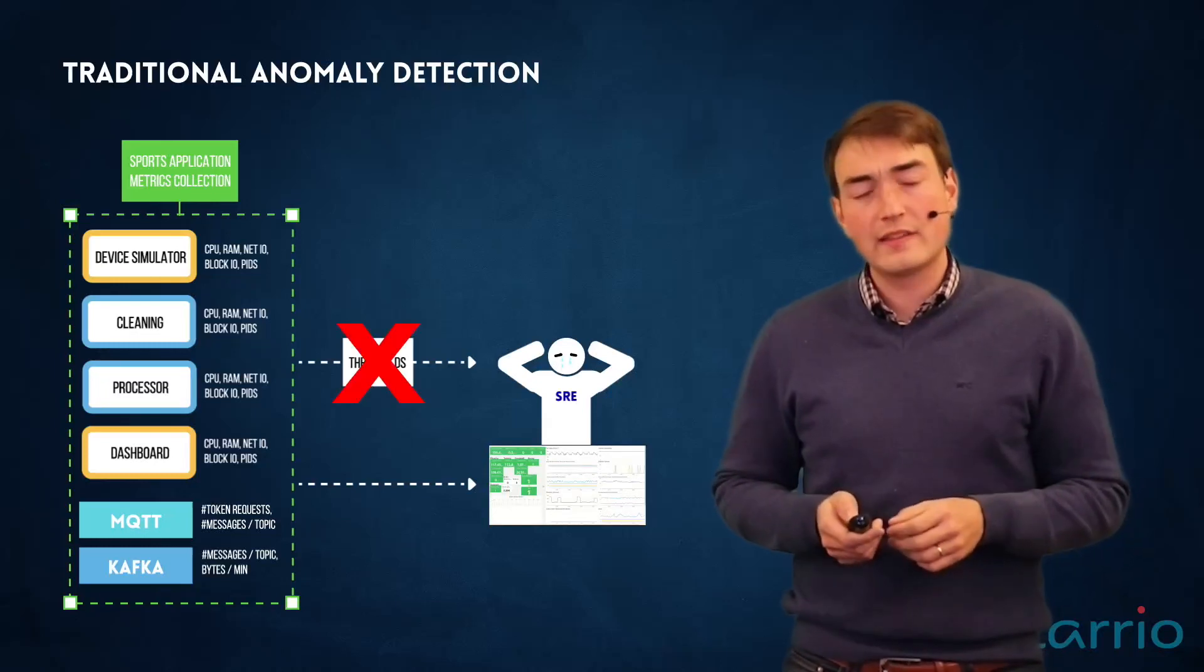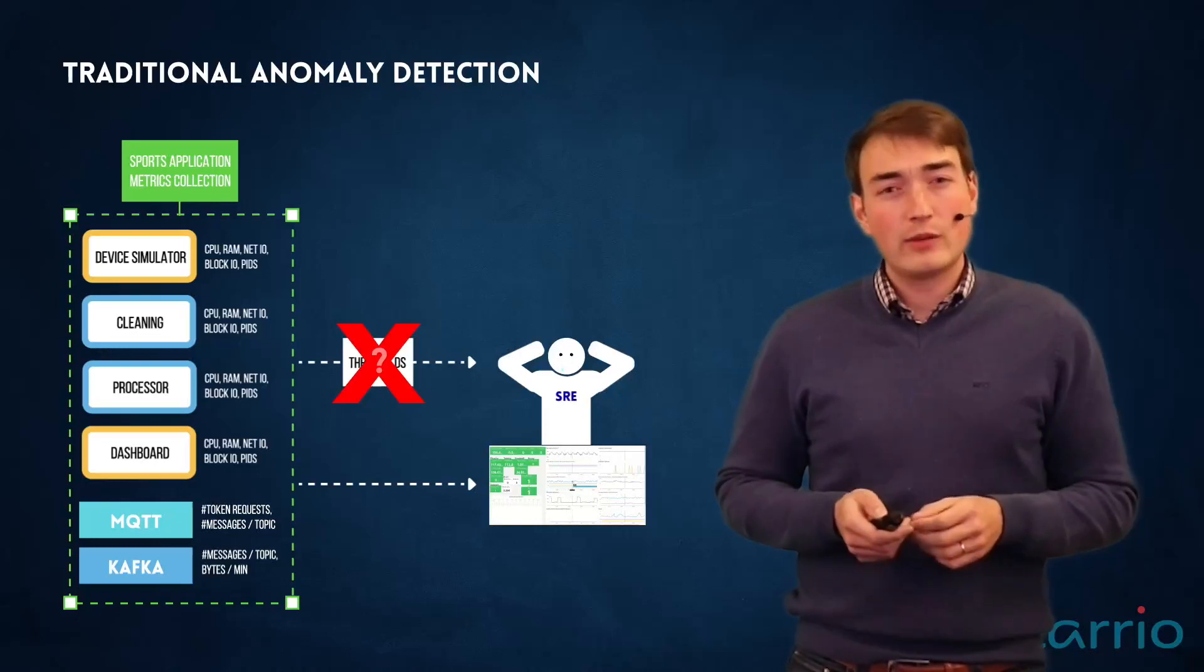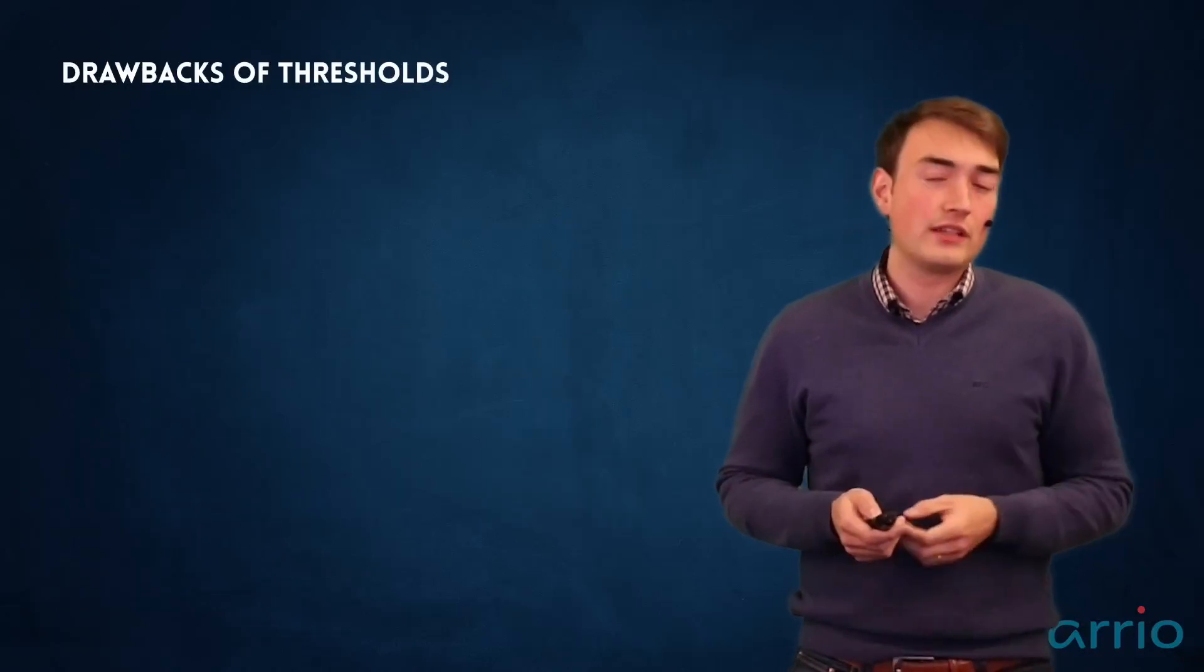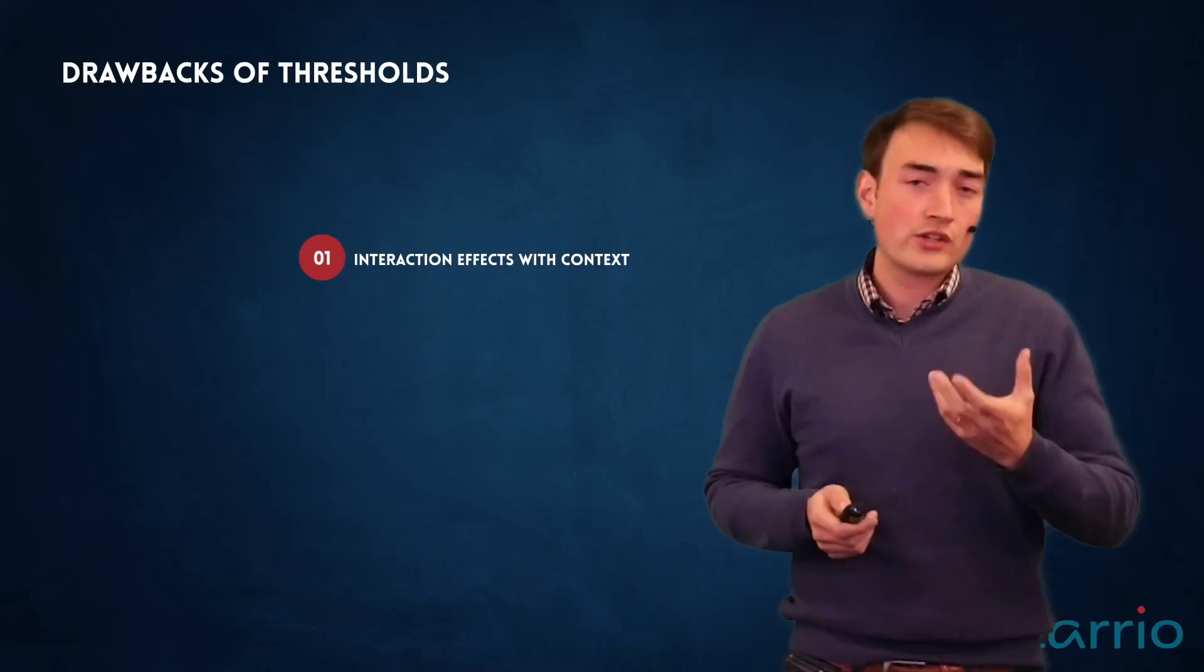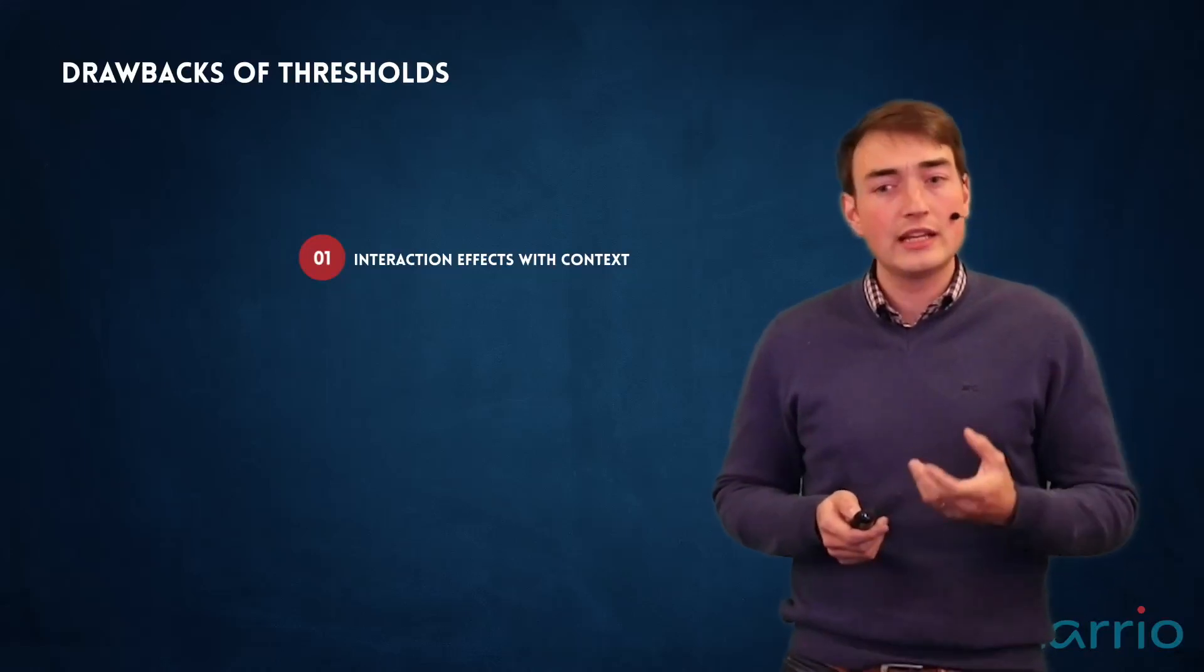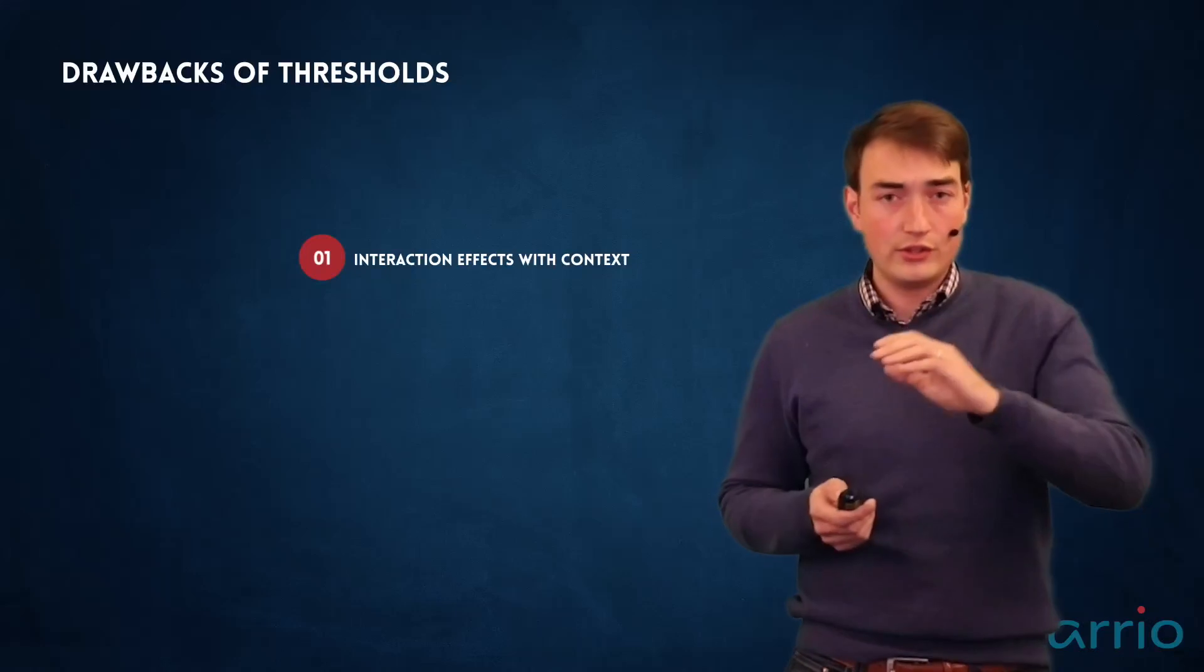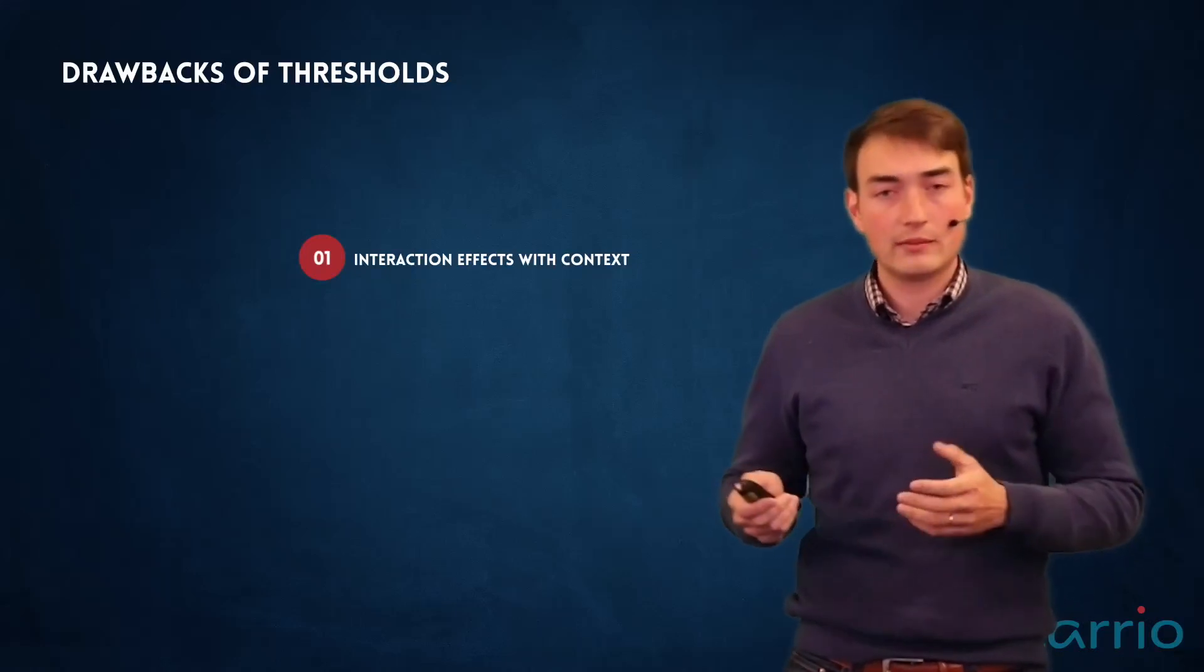So we were thinking, what can we do differently? Can we work without thresholds? Because there are five specific things that are not working out if you are using thresholds. The first one is by using thresholds you are not actually using the interaction effects that you know and the context that you know for your whole application. You're just using simple thresholds for all the microservices that build up the application.